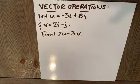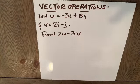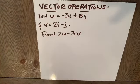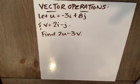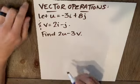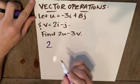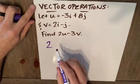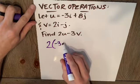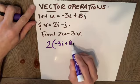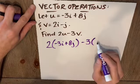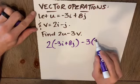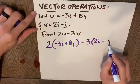Vector operations. Let vector u equal -3i + 8j, and let vector v equal 2i - j. Find the resultant vector 2u - 3v. This is 2 times (-3i + 8j) minus 3 times (2i - j), where vector v was 2i - j.